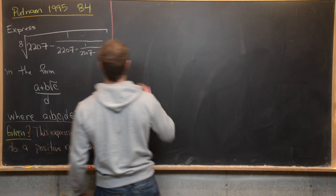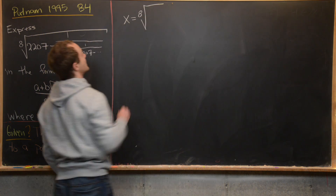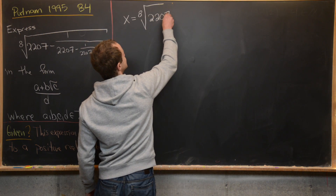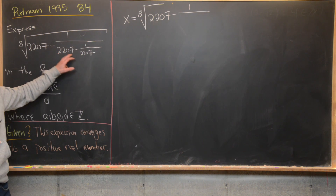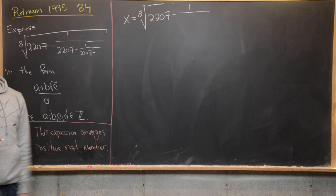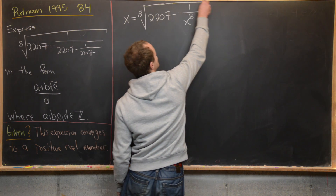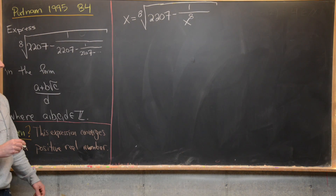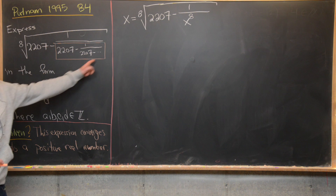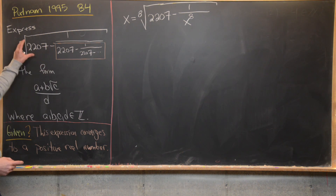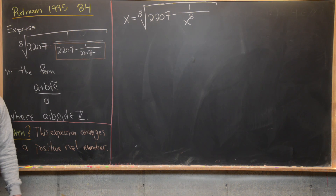What I want to notice is that if we set x equal to our expression — the eighth root of 2207 minus 1 over 2207 minus 1 over... — all of the stuff in the denominator is exactly our entire expression without the eighth root. That means all of this can be condensed into x to the eighth power. Because of its infinite continuedness, the inside of the eighth root is exactly x to the eighth.